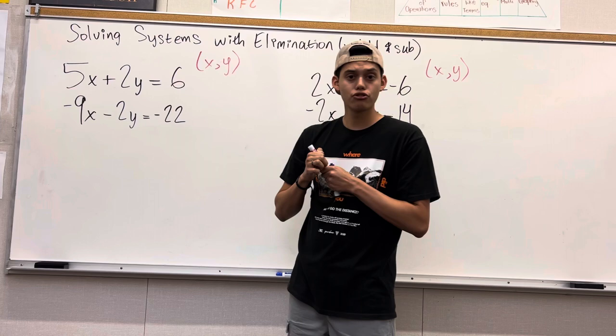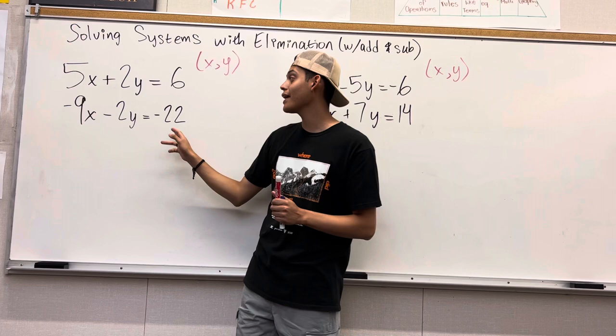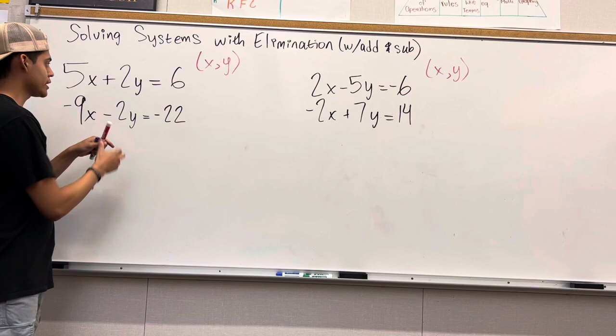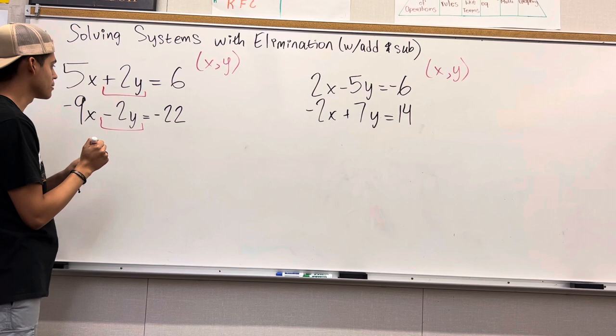We have 5x plus 2y equals 6 and negative 9x minus 2y equals negative 22. Alright, so what I taught you guys with addition, if you see the opposite of two terms that look very similar, we have this 2y and this negative 2y. If we have the opposite of each other, that is when we are going to do addition.